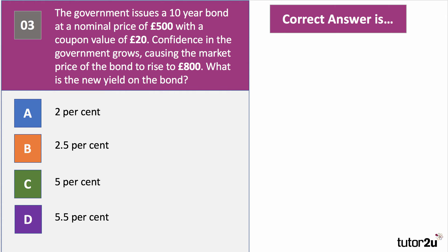Question 3: The government issues a 10-year bond at a nominal price of £500 and offers a coupon of £20. Confidence in the government grows, investor confidence improves, causing the market price of the bond to rise to £800. What is the new yield on the bond? Have a go and press the pause button.